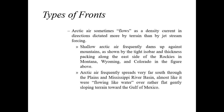You get shallow Arctic air that frequently dams up against mountains — that's known as cold air damming. That's going to be shown by tight isobar and thickness packing along the east side of the Rockies. That cold Arctic air banks up against the eastern side of the Rocky Mountains in Montana, Wyoming, and Colorado. Arctic air frequently spreads very far south through the plains and Mississippi River Basin — just like if you were to pour thick pancake syrup over your plate and watch the dense liquid spread out — that's similar to what happens with Arctic air flowing over relatively flat, gently sloping terrain.